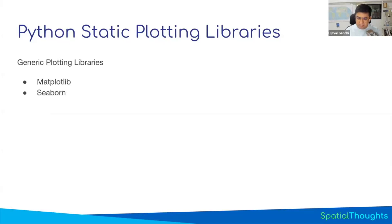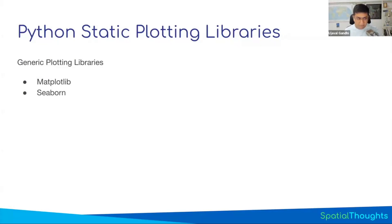Seaborn is a modern version of matplotlib — built on top of it and designed specifically to make statistical charting easy. So if you want to do violin charts or box plots, Seaborn makes it much easier. Once you know how matplotlib works, you'll be able to customize and create charts using Seaborn.